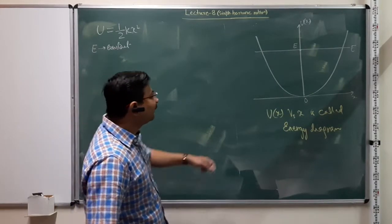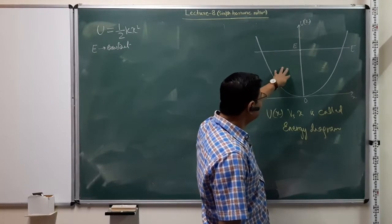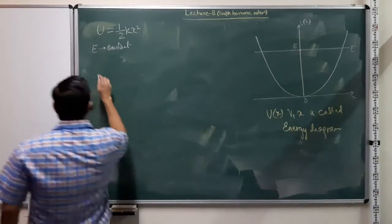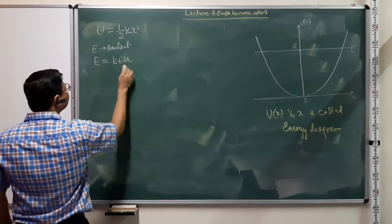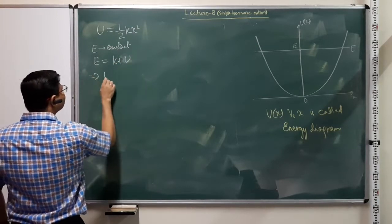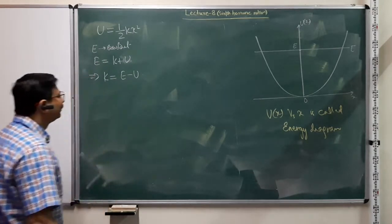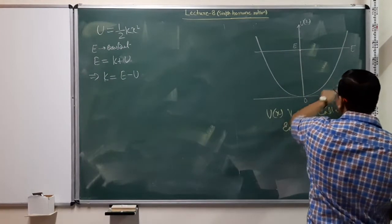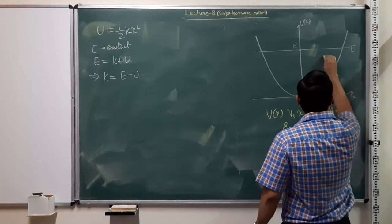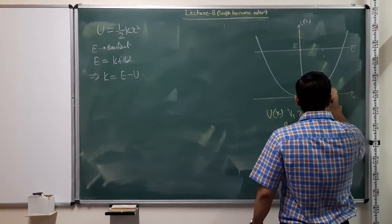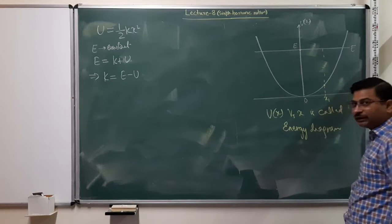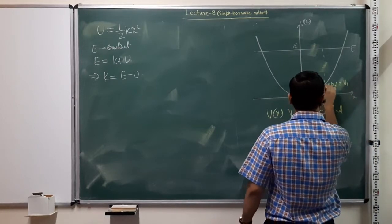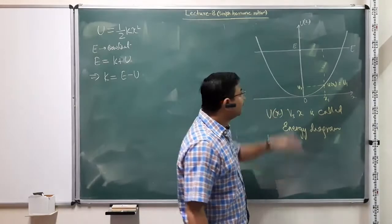One can see certain properties of the system by looking at the energy diagram. For example, the potential energy varies like this, and the total energy of the system is here. We know that E equals K plus U, which implies the kinetic energy at any given point in space is simply the total energy minus the potential energy there. We know the total energy — it is a constant — and we know how the potential energy changes.